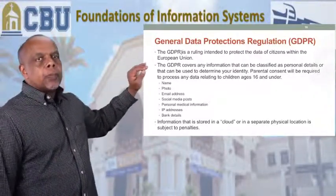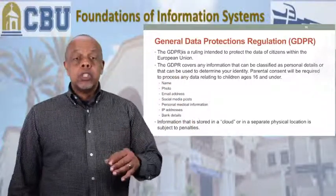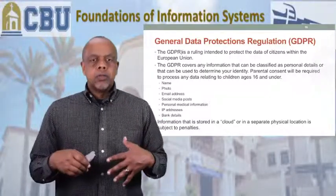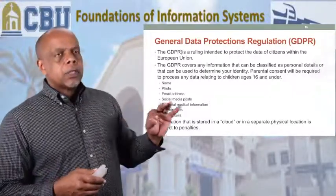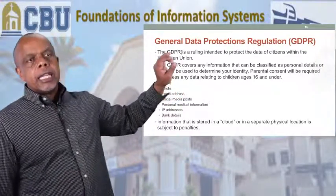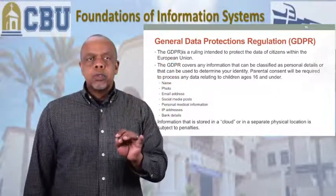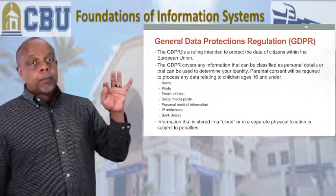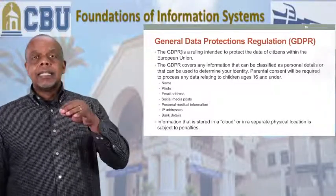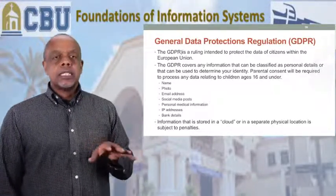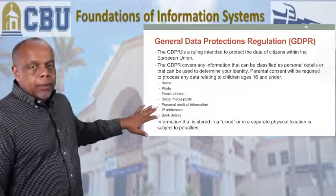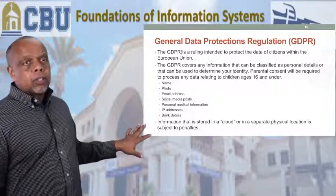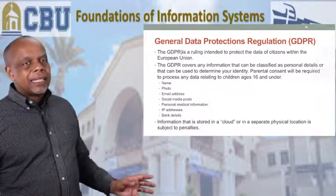You probably wonder what this has to do with us here in the U.S. This covers any information that can be classified as personal details or used to determine your identity. It also says that parental consent will be required to process any data related to children 16 years and younger. Examples include your name, photos, email address, social media, medical information, IP addresses, and bank details.